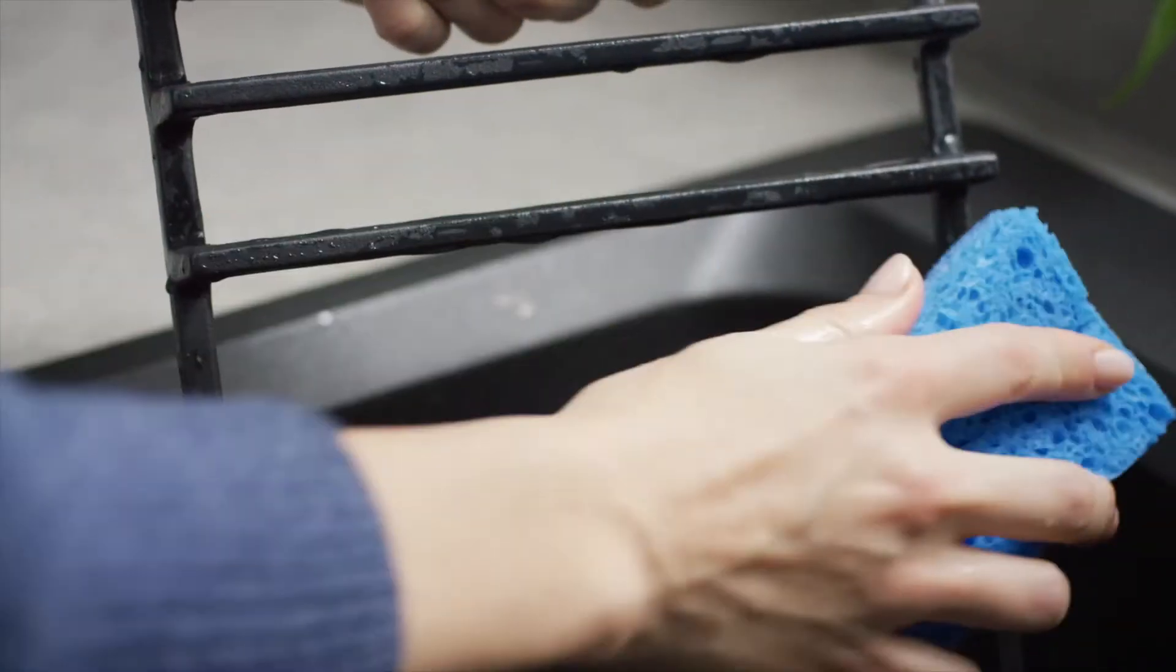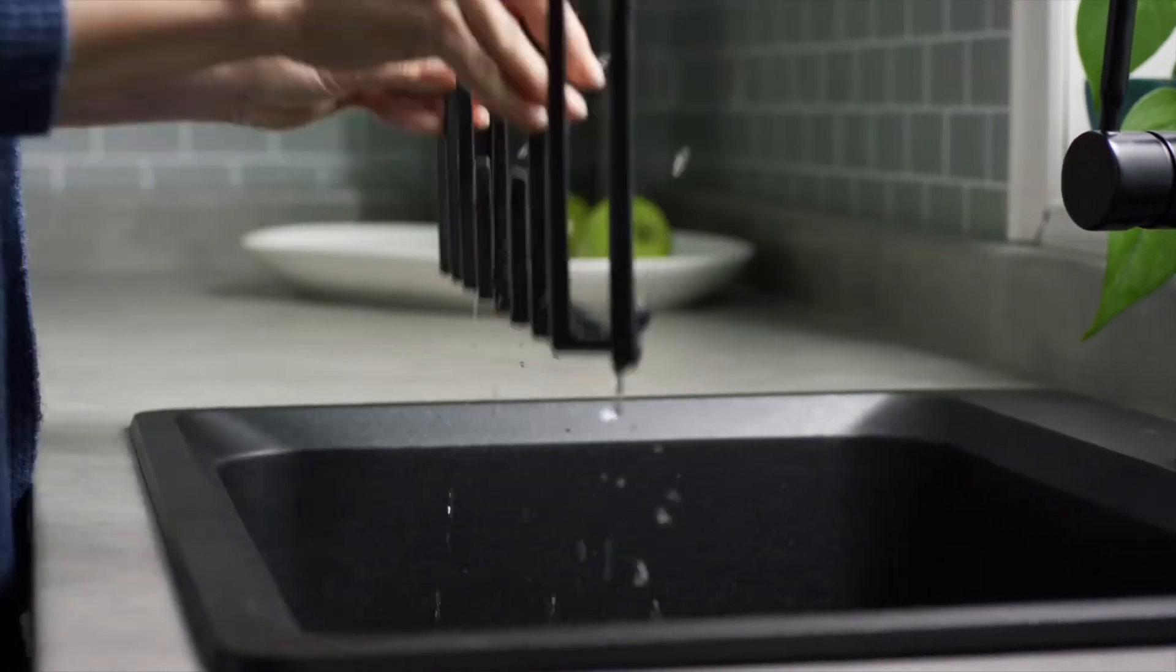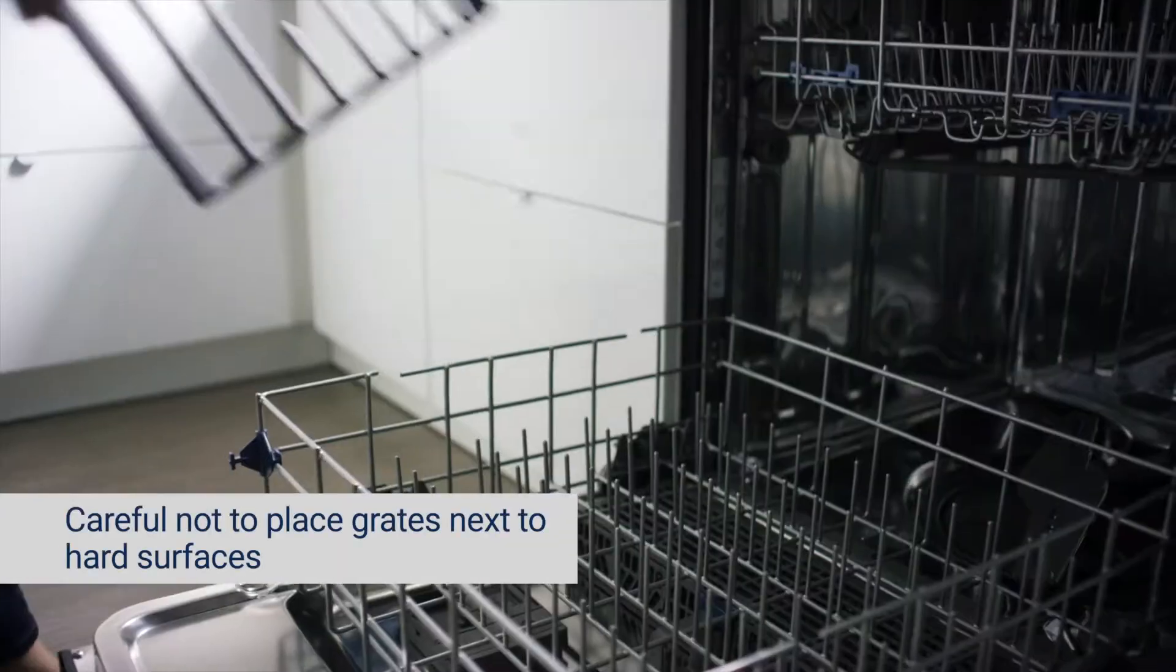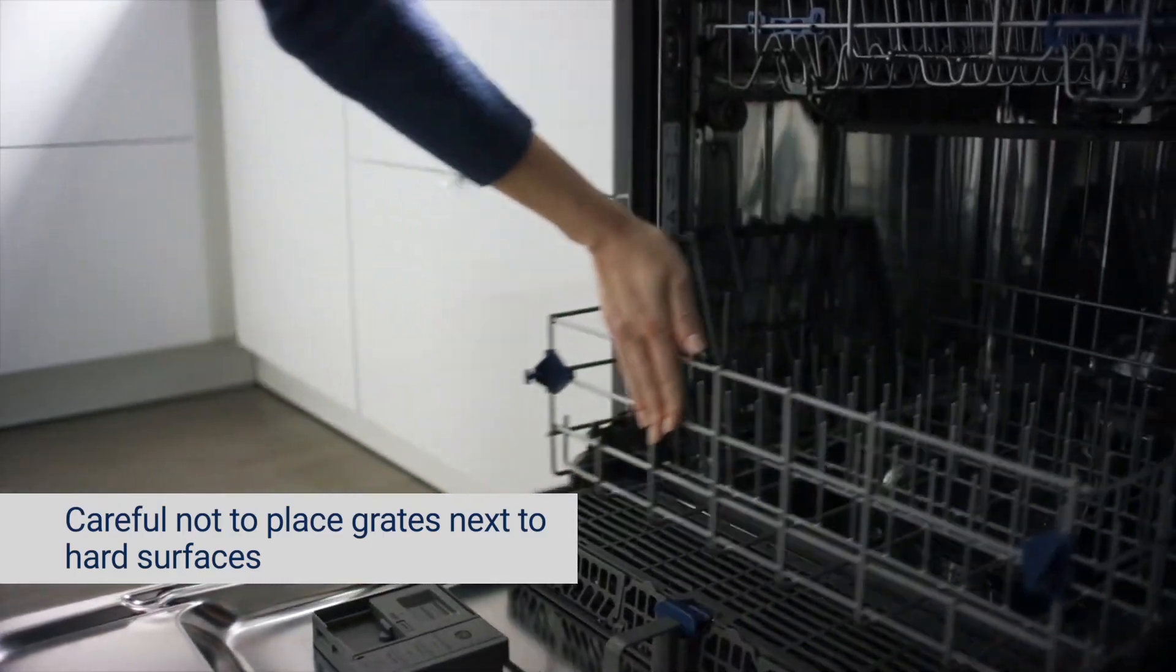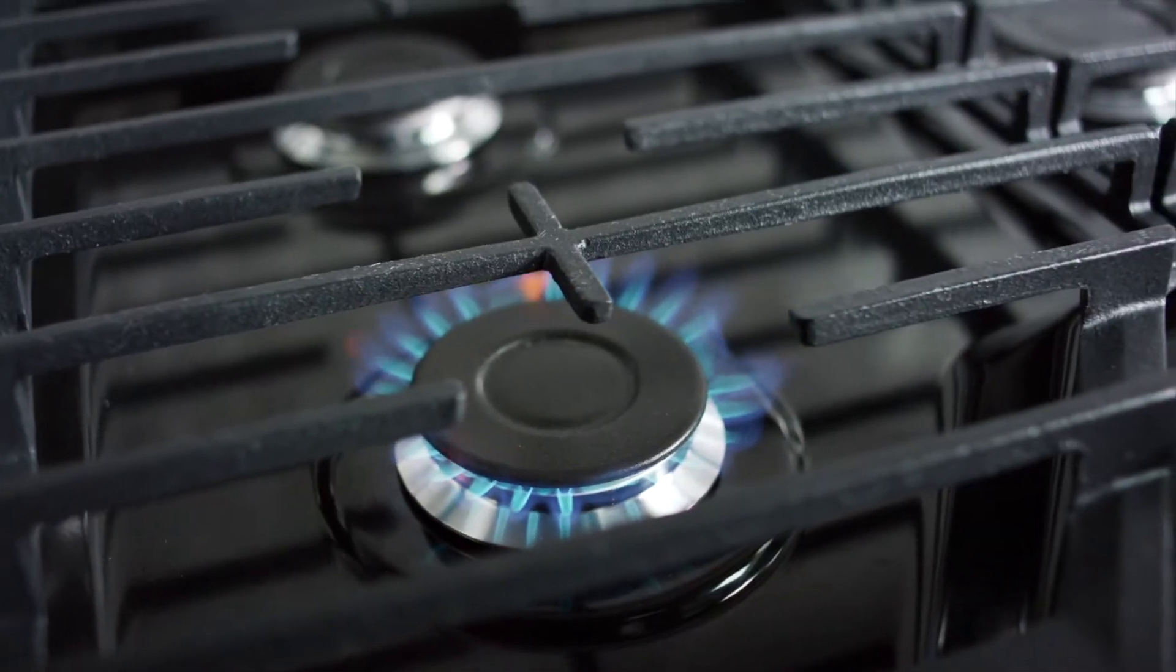To avoid chipping, do not bang grates against each other or against hard surfaces like cast iron cookware. Although the grates are durable, they will gradually lose their shine due to exposure to high temperatures.